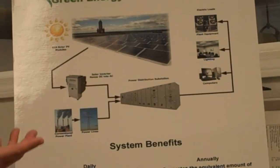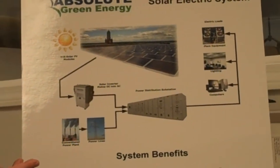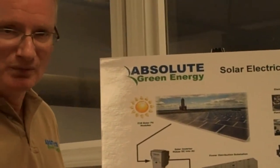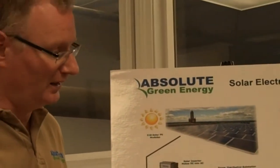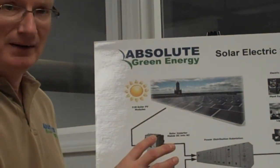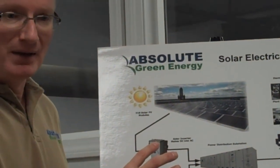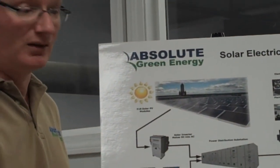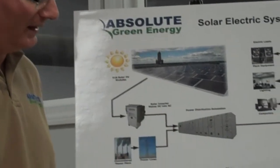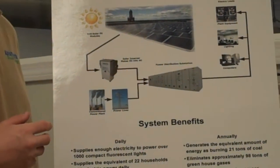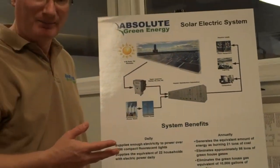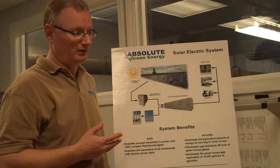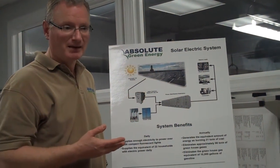So in the event of net metering, which means that the solar provides some of your power and then the grid provides the rest, you always have access to both and you use the solar to the extent that it's available.